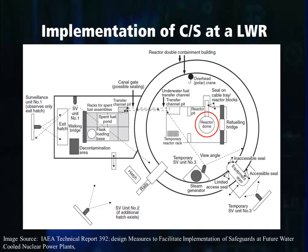At this facility, you can see that the IAEA would typically place seals on the equipment door that leads to the exterior of the containment building. By placing seals on this door, the IAEA will know whether or not access to this door has been allowed. If the seal is found to be broken, the IAEA can use this to go back to video surveillance and determine what activities took place after the seal was broken.